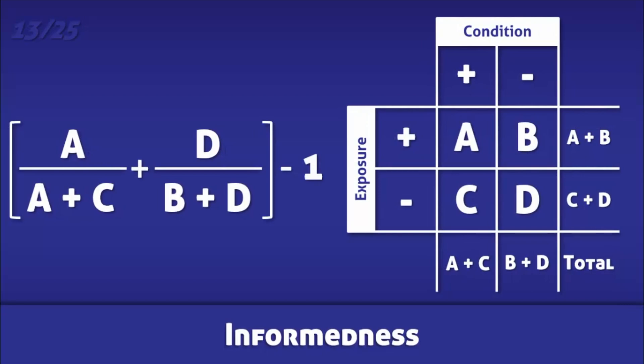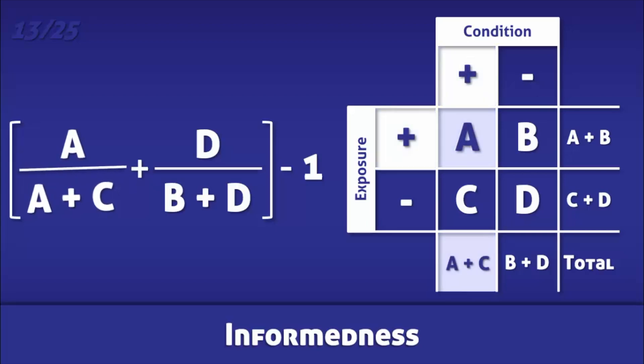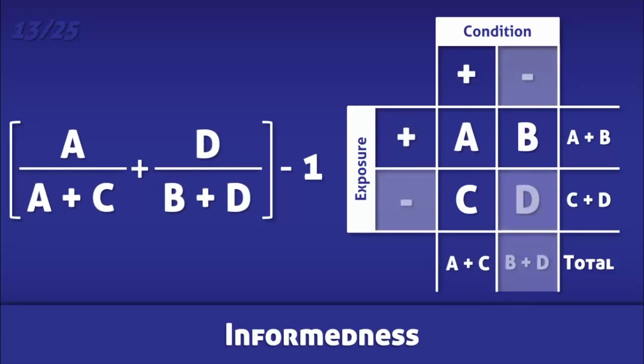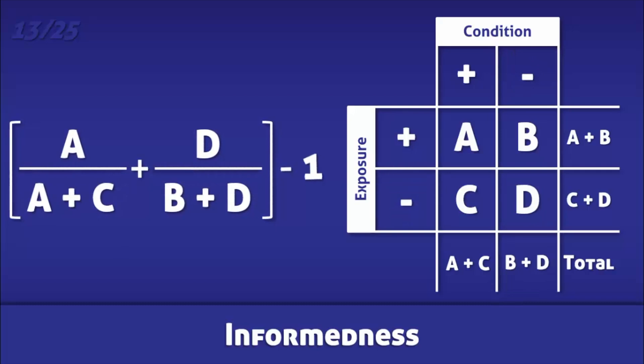Informedness is the probability that a test will provide an informed prediction as opposed to a guess. It is calculated by adding the sensitivity to the specificity and then subtracting one from the sum.